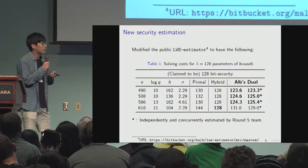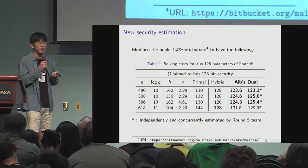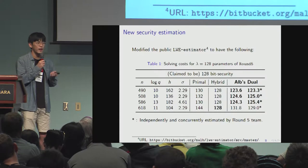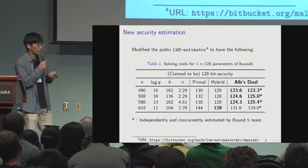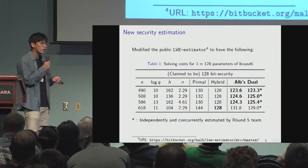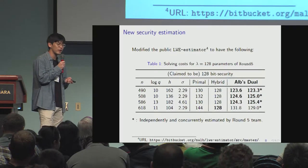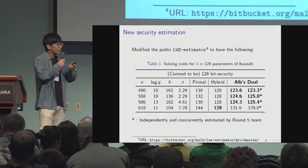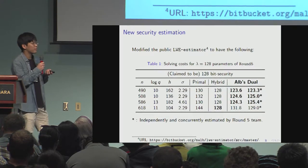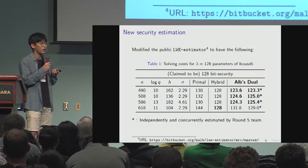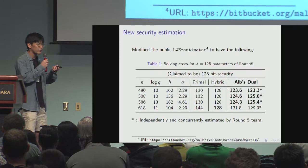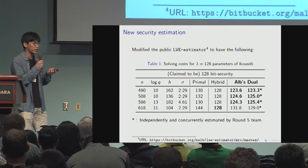I modified the public LWE estimator of Albrecht et al., and reproduced their parameter choice and also evaluated the dual attack. I would also like to remark that I sent an email to the Round Five team to inform them of this, and they replied that they are already aware of this and are trying to update the parameters accordingly.